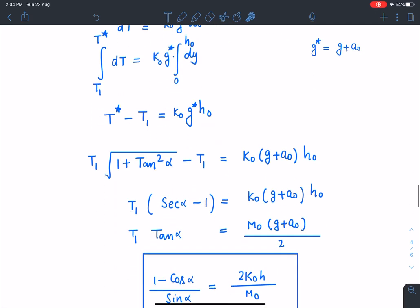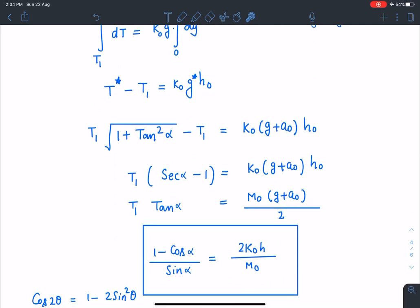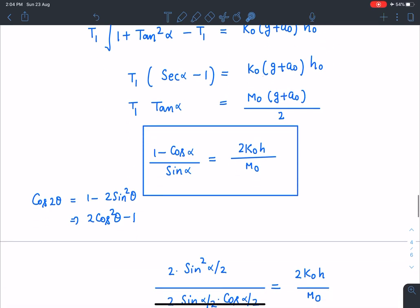Now let's substitute the value. T star is T1 times root of 1 plus tan square alpha minus T1 and this g star is g plus a0. So substitute the values here, simplify and I'm going to get 1 minus cos alpha by sin alpha is equal to 2k0 h by m0. So it's a quite simple relation.